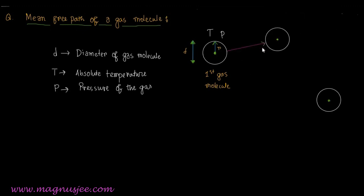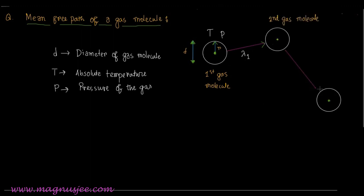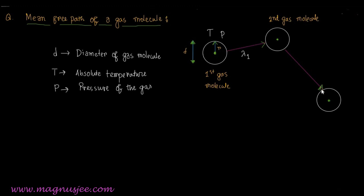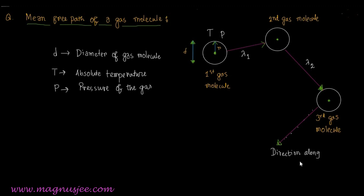This is the direction along which the first gas molecule will be moving and undergoes a collision with the second gas molecule. Lambda 1 is the distance travelled by the first gas molecule before the first collision. Lambda 2 is the distance travelled by the first gas molecule between the first and second collision. The first gas molecule is deviated after each collision with another gas molecule.